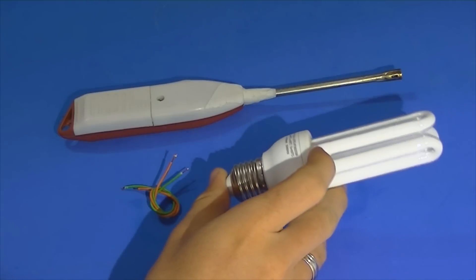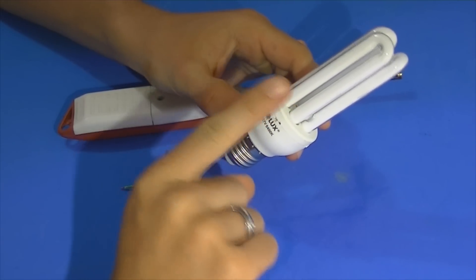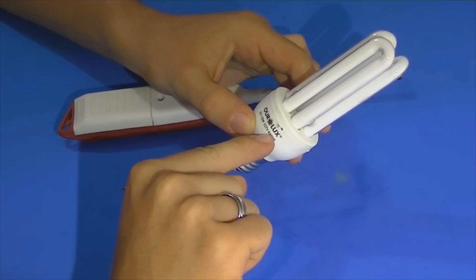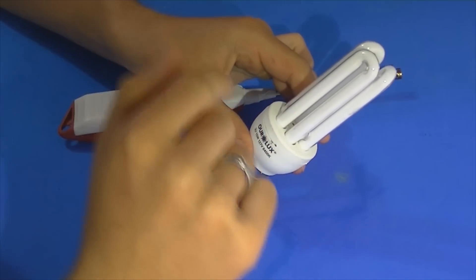Vamos precisar de uma lâmpada fluorescente. A lâmpada pode ser queimada. Apenas uma observação: o que deve estar queimado tem que ser o circuito eletrônico e não o filamento que passa aqui por dentro. Como que a gente observa isso?